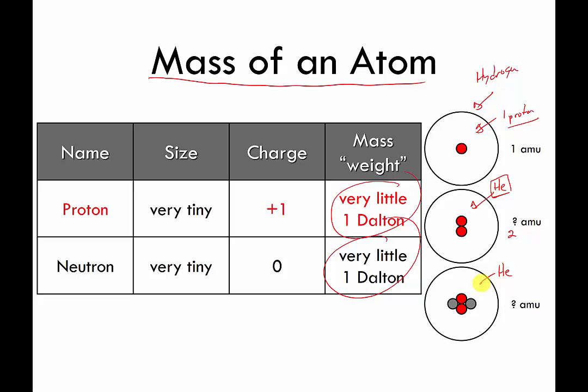Two protons is helium. But the red circles and the gray circles they weigh roughly the same. So this particular helium weighs about four AMU or four Daltons. So you can have heliums or any other type of atom that come in different weights. And those different weights are called isotopes.